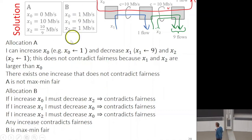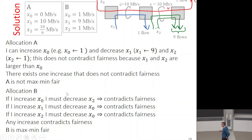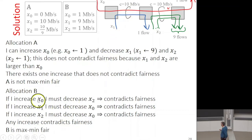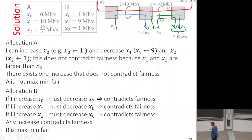For allocation B, if we try to increase x0, which equals 1 — the same as the green — we must decrease the green because the sum equals 10. But the green had the same as x0, so we are not allowed. Similarly, if we try to increase x1, which has 9, we must decrease sources that had less — so we should not do it. For every possible move, we are forced to decrease a source that was less well off or equal. So this is a stationary point and is therefore max-min-fair.